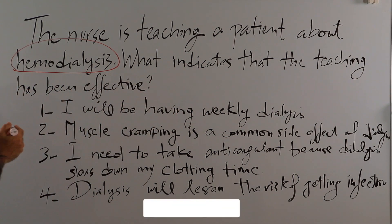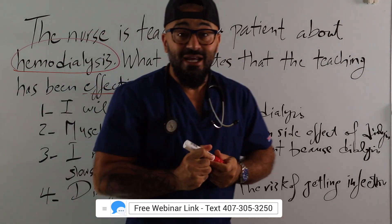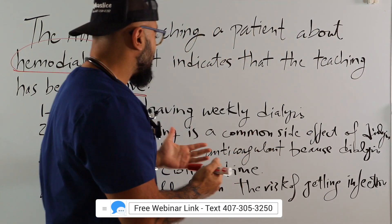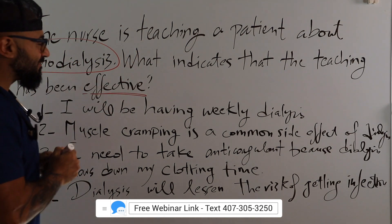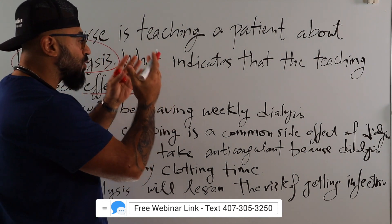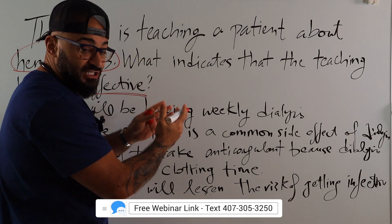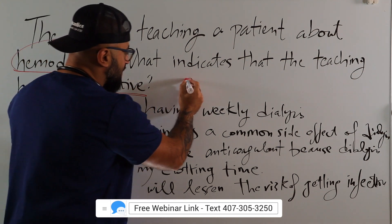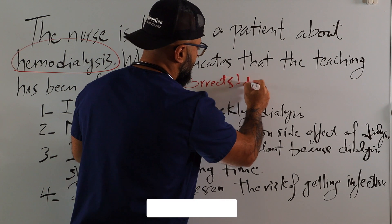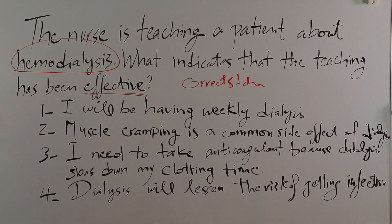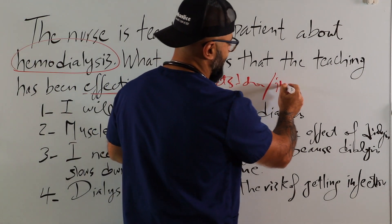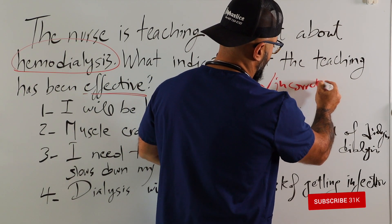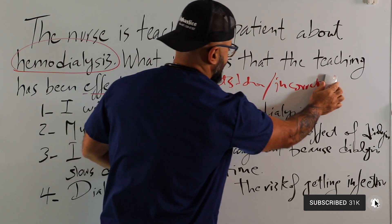What indicates that the teaching has been effective? I'm looking for a correct statement. Those types of questions — because it says 'effective' — means the patient really understood the patient teaching or the education. So I'm looking for the correct statement. Now, if the question said 'what indicates that the teaching has not been effective or the patient did not understand,' then I'm looking for the incorrect or false statement. In this case, we're looking for the correct statement.